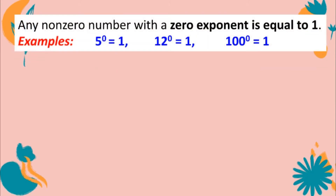Any non-zero number with a zero exponent is equal to 1. This means that when the exponent is zero, regardless of the base, the value is always 1. Examples: 5 to the zero power equals 1, 12 to the zero power equals 1, 100 to the zero power equals 1.